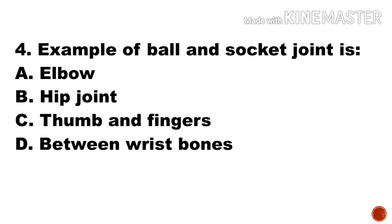Next question: An example of a ball-and-socket joint is — a) elbow, b) hip joint, c) thumb and fingers, d) between vertebrae. Option b, hip joint, is the right answer. Another example of a ball-and-socket joint is the shoulder joint.